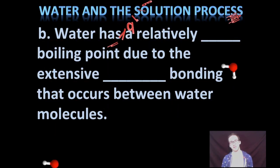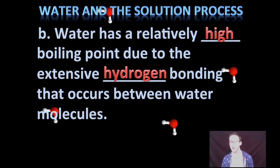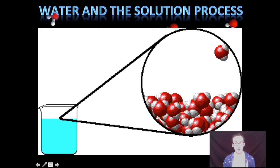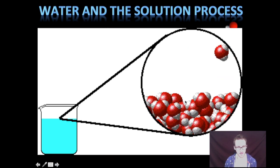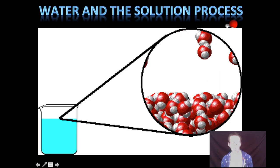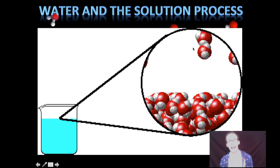Second property of water that is due to the hydrogen bonding that occurs in between the water molecules is its relatively high boiling point. And when we think about what's happening when water is boiling, we're moving from the liquid phase where we have relatively lower kinetic energy to the gas phase with relatively higher kinetic energy.